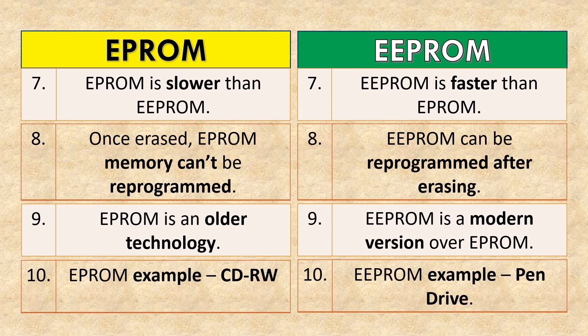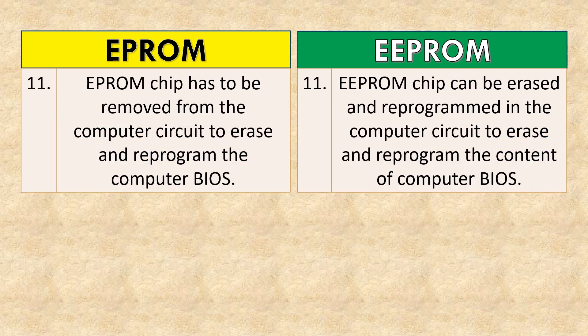An example of EPROM is CD-RW, and an example of EEPROM is a Pen Drive. The EPROM chip has to be removed from the computer circuit to erase and reprogram the computer BIOS. The EEPROM chip can be erased and reprogrammed directly in the computer circuit to update the content of the computer BIOS.